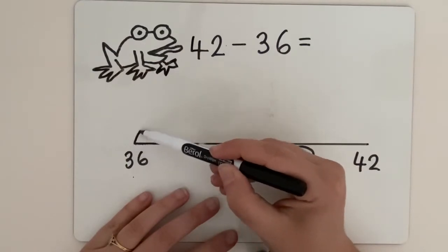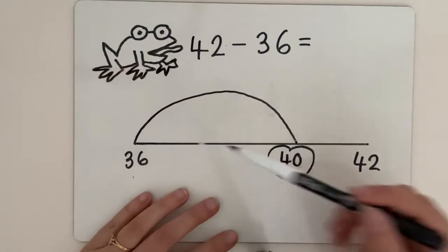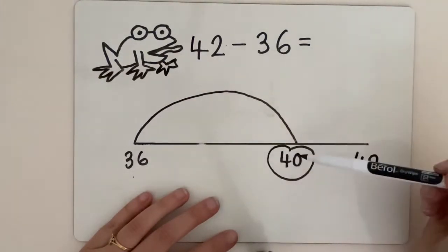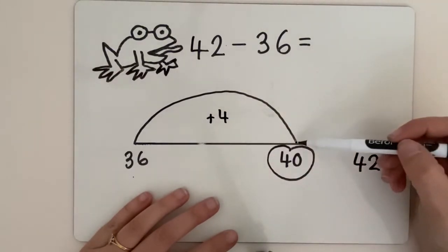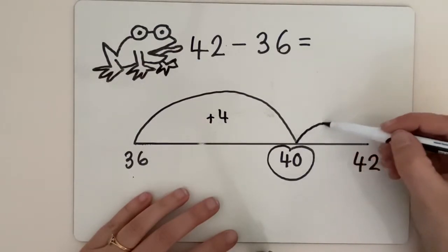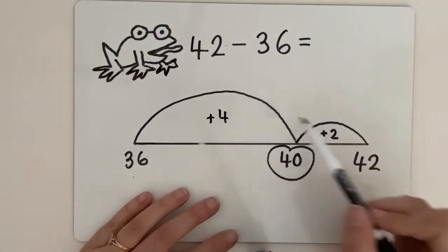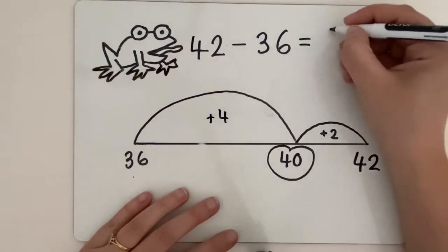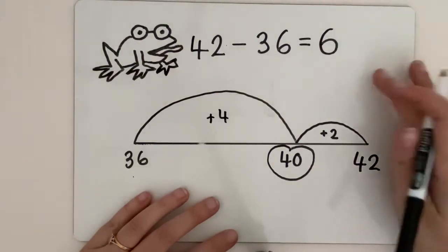We're going to go from 36 to that tens number. You should know your number bonds to 10. That should be a very quick calculation. 36 to get to 40, he's jumping 4. Then from the big fat round 10, 40, you can jump to 42 really easily with a jump of 2. We can add up those two jumps, 4 and 2, which makes 6. So the difference between 42 and 36 is 6.